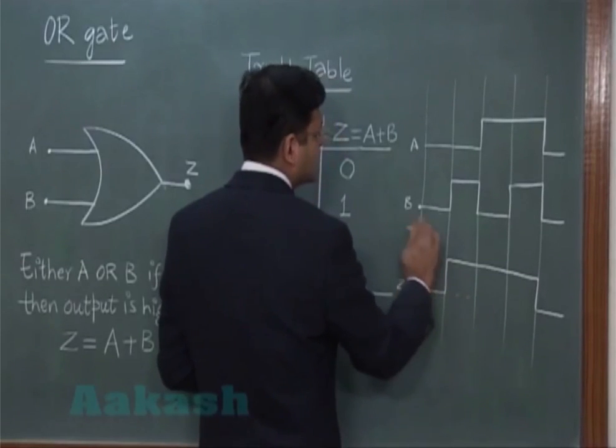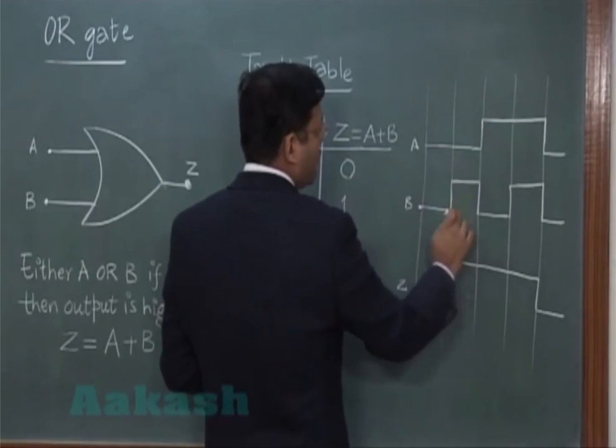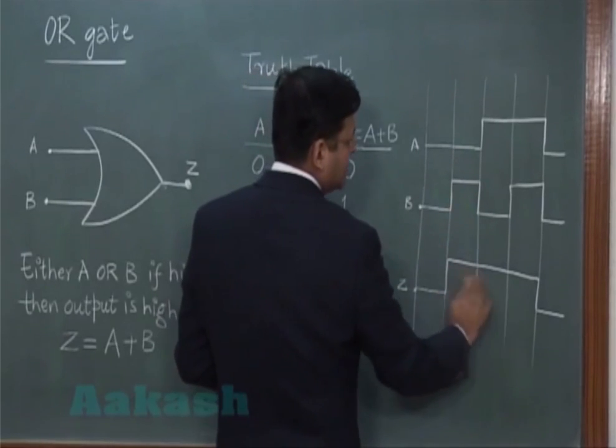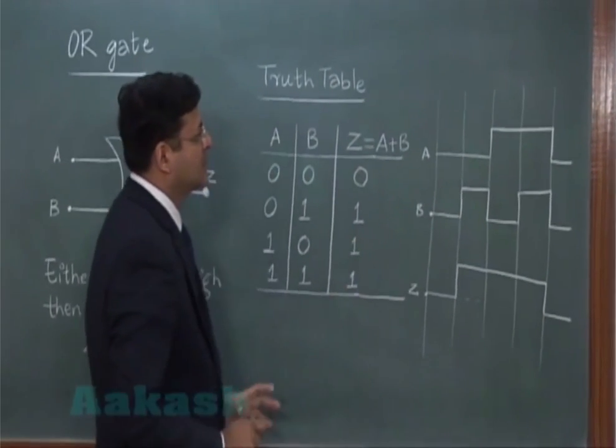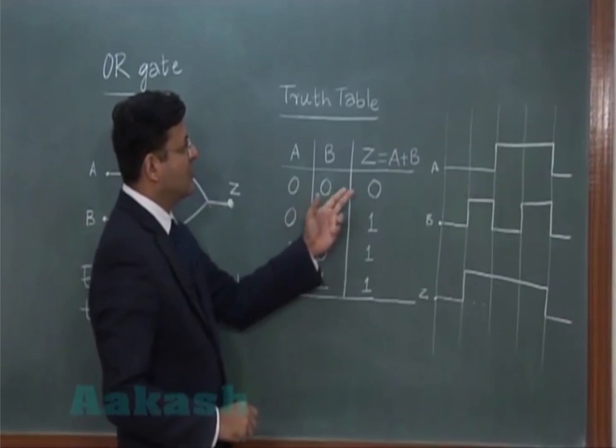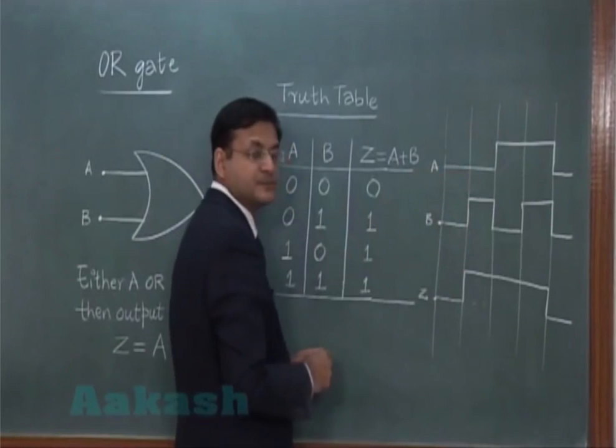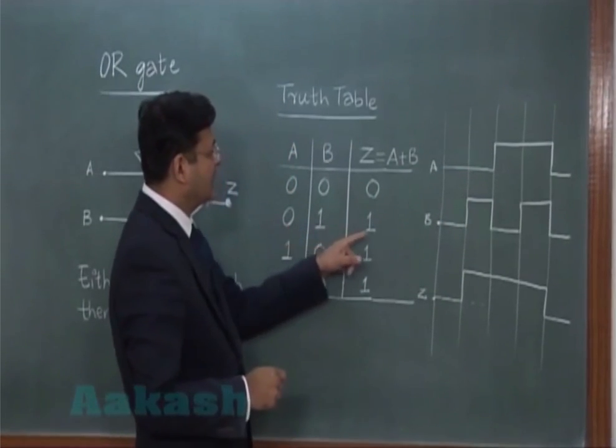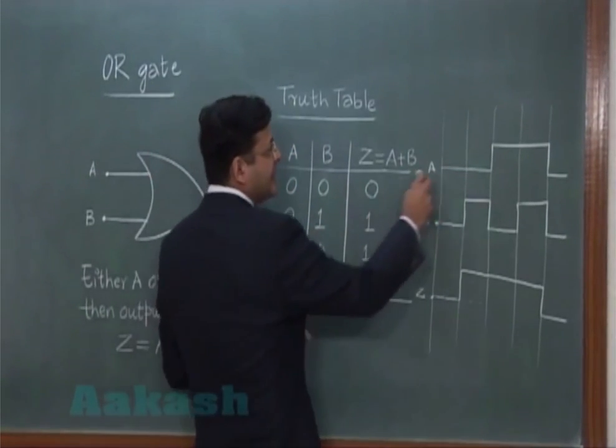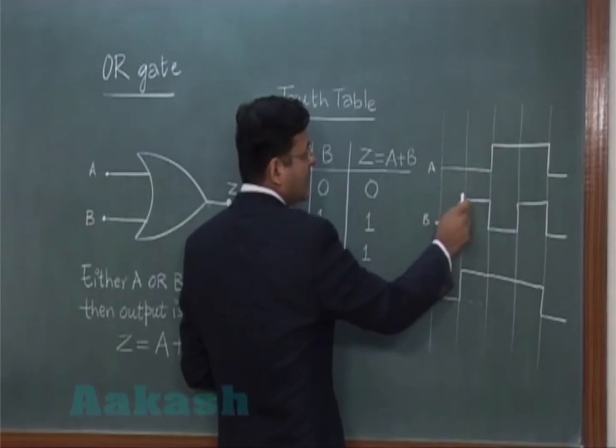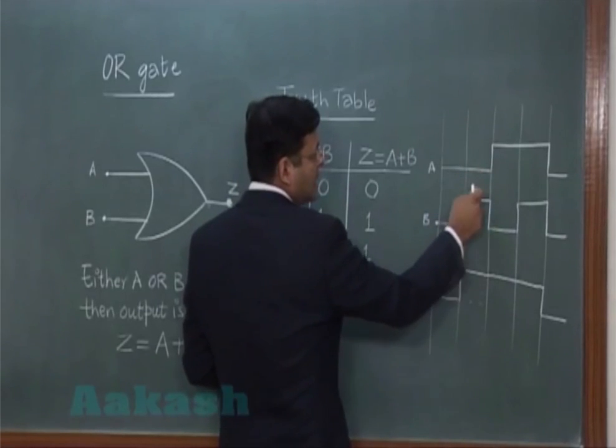Now, you should understand that everything in the pulse form can be represented this. You see here, 0, 0 and output is 0. So the lower value signal, this is 0, this is 0 and output is 0. Then you have 0, 1 and output is 1. A is 0 but B is 1 because higher value is treated as 1 and output is 1.